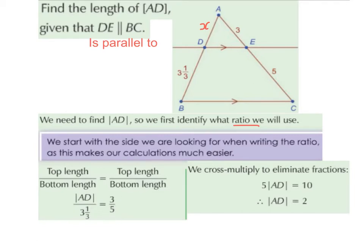All we have to do is cross multiply. It's going to be AD multiplied by 5, giving us 5AD. And then 3⅓ multiplied by 3 will give us 10.